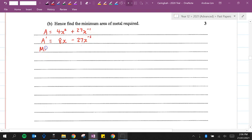So it's going to be a minimum or a maximum when it's equal to 0. So 8x minus 27 over x squared equals 0. I'm going to multiply everything by x squared to get rid of the denominator. This will leave me with 8x cubed minus 27 equals 0. So 8x cubed equals 27, x cubed equals 27 over 8.